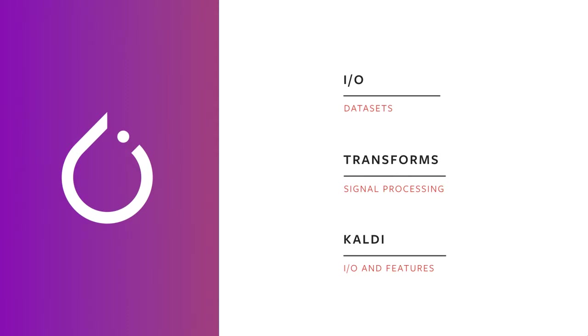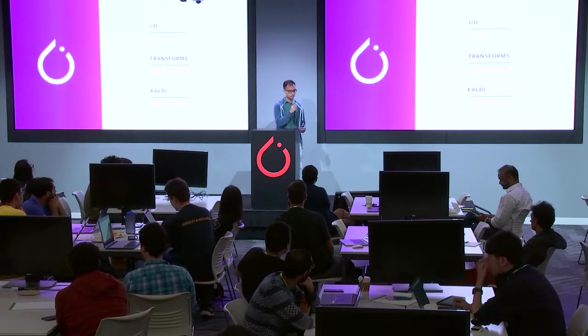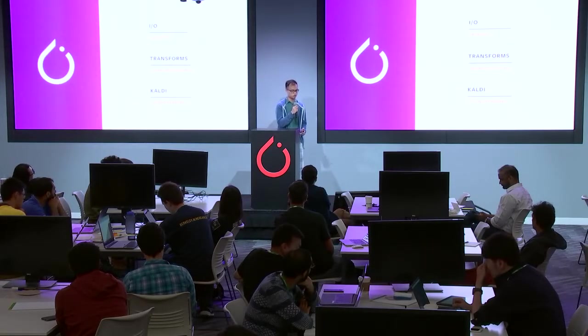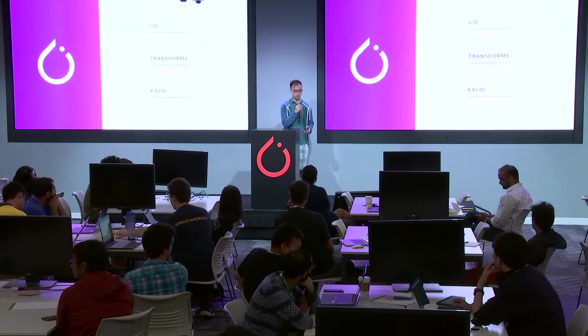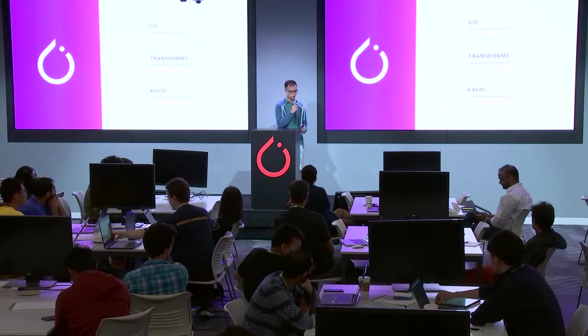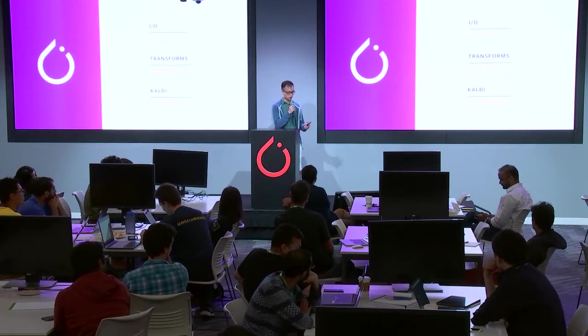Here is a brief overview of what you can do with TorchAudio. We have IO and transforms, as well as Kaldi support. For IO, you give us a file name and we can load a tensor from it. In addition, you can take a tensor and save it to a file. We support a wide variety of file formats such as MP3, FLAC, and WAV files. With IO, we can also load datasets very easily — you just write a couple lines of code.